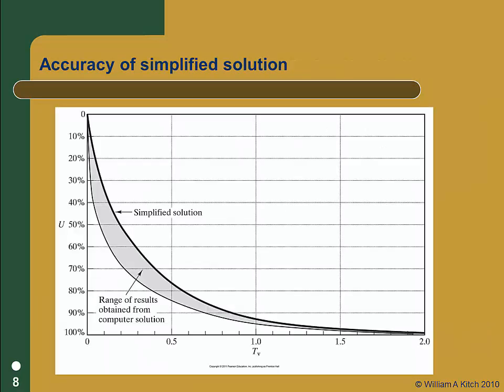Remember this is a simplified solution and there will be some differences between it and the more accurate computer-based solutions. This figure will give you an idea of how much these two solutions can differ. The actual difference depends upon the specific problem being solved, but the gray area shown gives you a general idea of the range of answers that are possible. Note that as time increases, the simplified solution becomes more accurate.